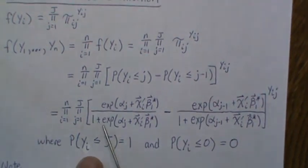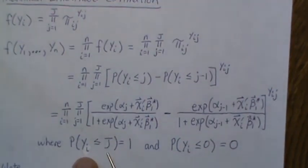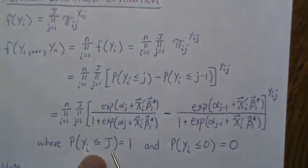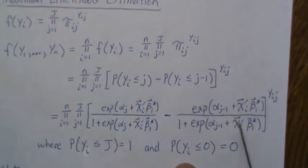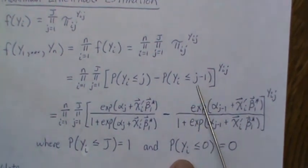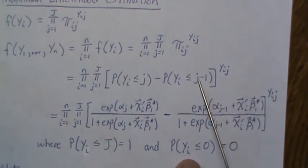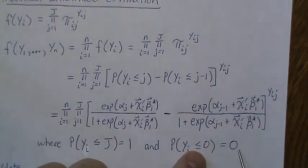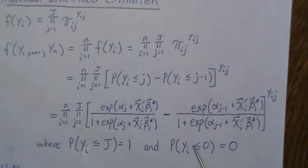One note here though, when probability of Y being less than or equal to capital J. So that means it's one of those categories that has to be one. So we have to substitute that into this. And also over here, when J is one, the probability that Y is less than or equal to zero. That means it's not in any of the categories. That's probably zero because it has to be one of those categories. That's why we created it.